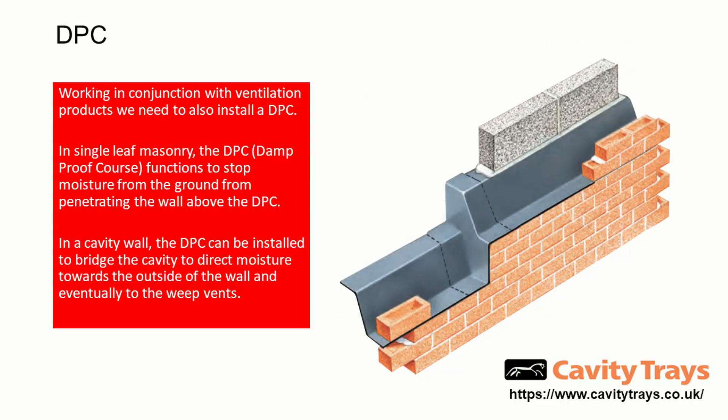Working alongside the weep vents we need to install a DPC. In single leaf masonry the DPC usually functions to stop moisture from the ground penetrating the wall above, but in a cavity wall it can perform a dual function. We can install it bridging the cavity to direct moisture towards the outside of the wall and eventually to the weep vents.